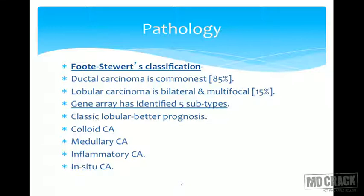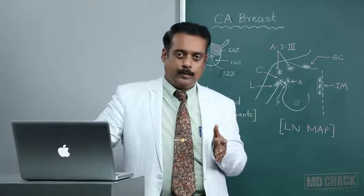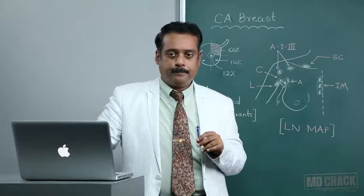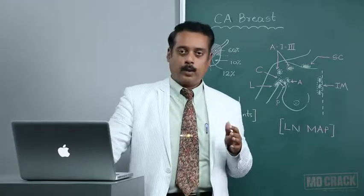Based on genetic study, these two broad categories are subdivided into five types. First, classical lobular carcinoma carries a better prognosis. Second, colloid carcinoma carries moderate prognosis. Third, medullary carcinoma is not so common but carries a poor prognosis. Fourth, inflammatory carcinoma is a relatively newer entity, not commonly seen 50 years ago, carrying high invasiveness. Lastly, in-situ carcinoma — meaning early carcinoma — where disease is limited to the basement membrane. When it breaches the basement membrane, it is considered advanced disease. In-situ carcinoma carries a better prognosis.